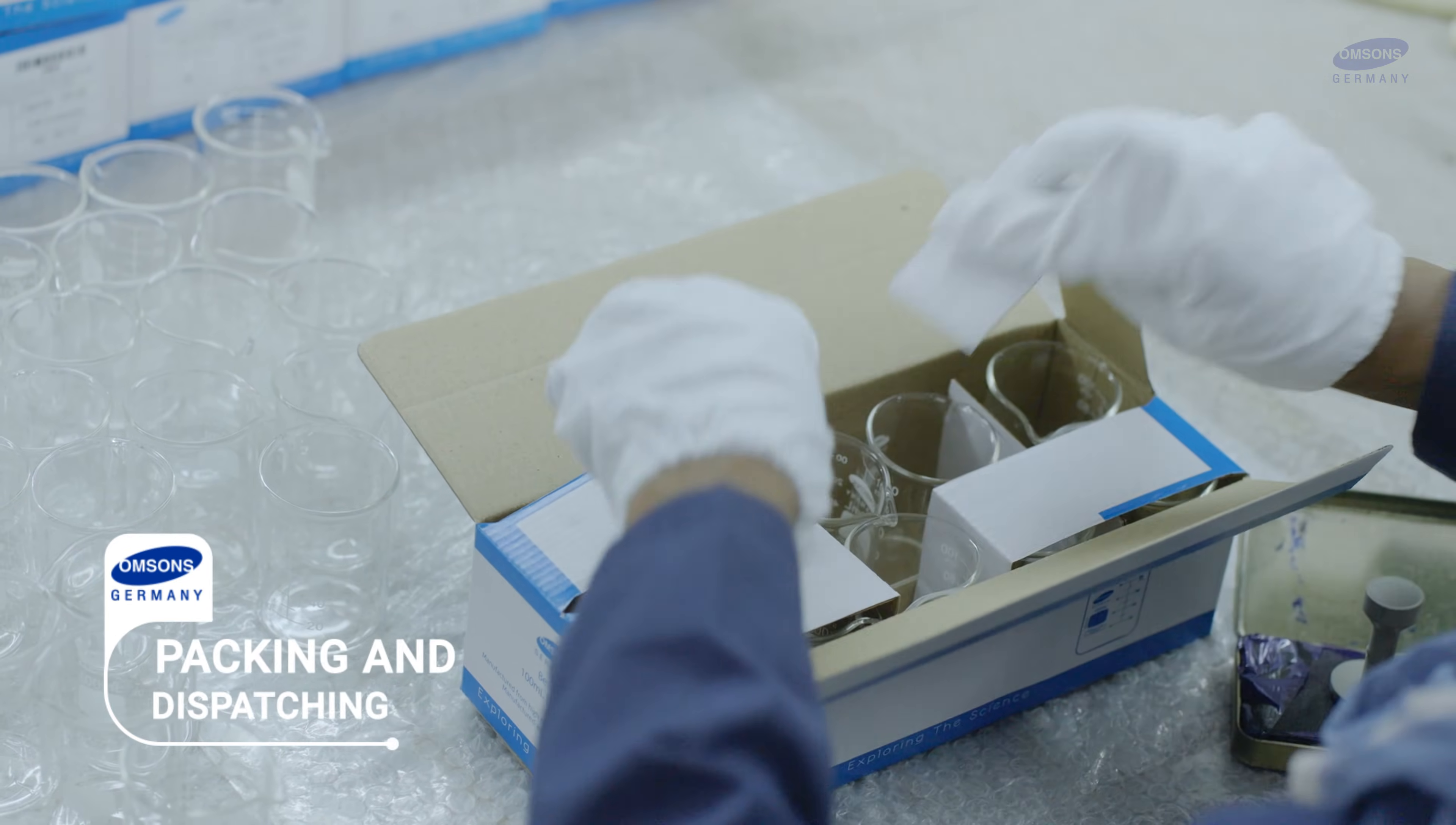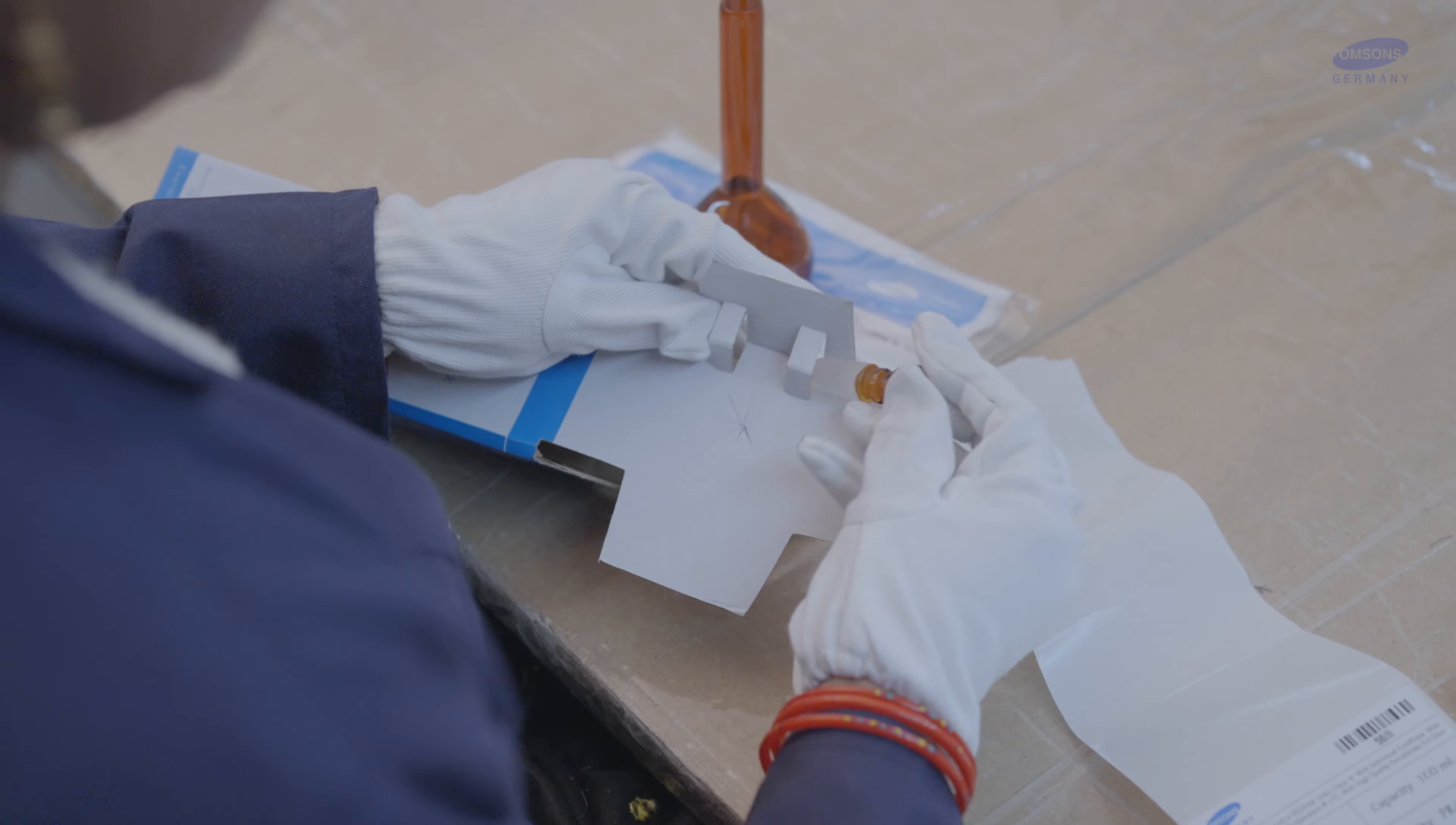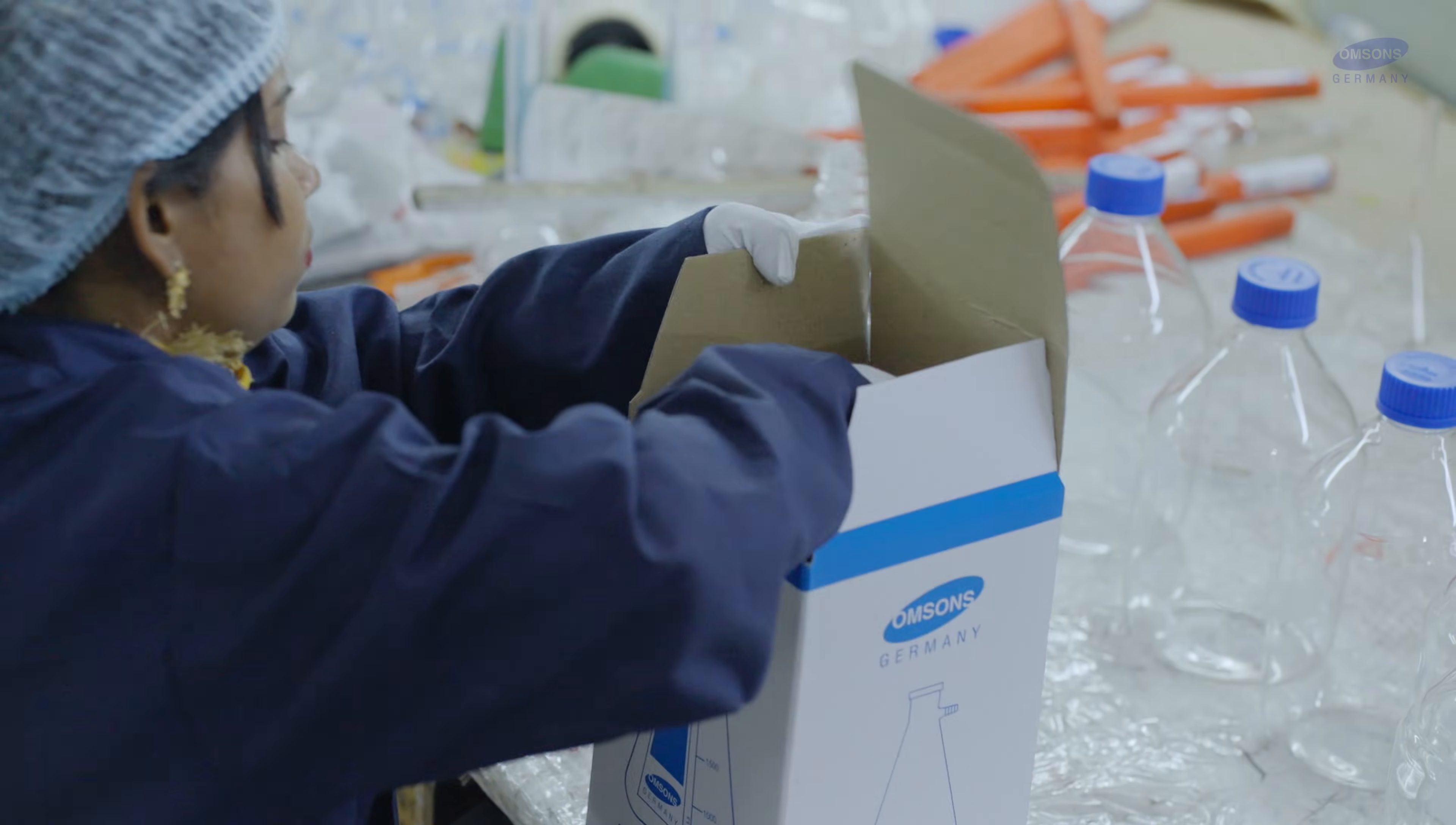Packaging & Dispatching: As the final products reach the packing department, they are once again individually checked before getting packed into the boxes with controller stamp punched on each box.